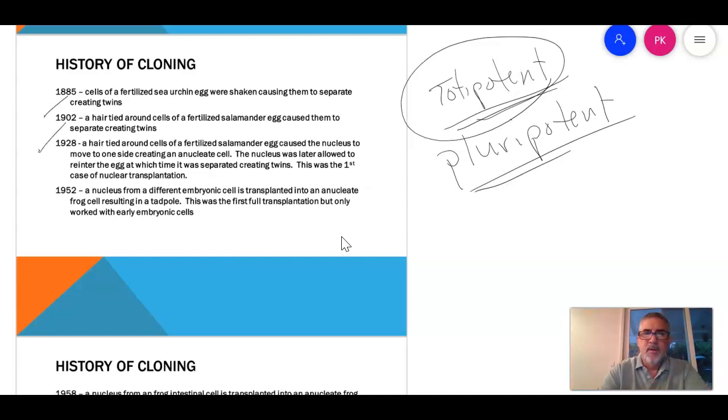In 1928, they created an anucleate cell. So they pinched a cell with the hair, and they caused the nucleus to stay to one side, but they separated the cell. Then they untied the hair and let the nucleus go to the cell that didn't have it, and they cut it off, and it started to grow. So that's the first evidence of nuclear transplantation. This becomes important, because this nuclear transplantation is going to be how we create Dolly the Sheep.